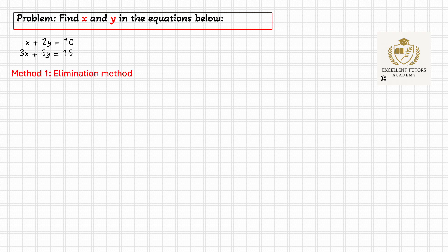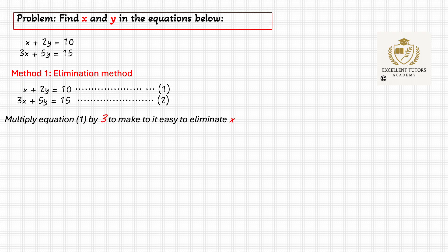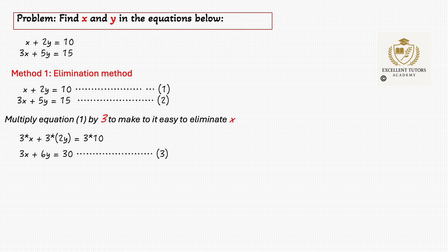The first method is the elimination method. We put two equations and name them equation 1 and equation 2. We multiply equation 1 by 3 to make it easy to eliminate x — that is, to make the coefficient of x the same. We have 3 times x plus 3 times 2y equals to 3 times 10, which gives us 3x plus 6y equals to 30. We call that equation 3.